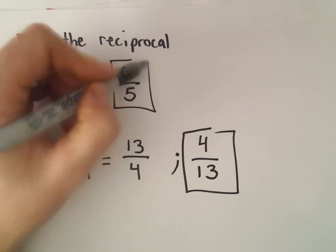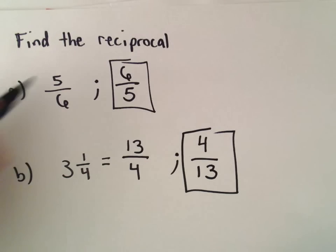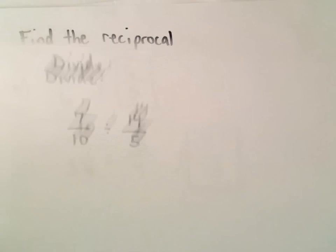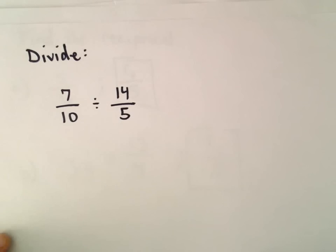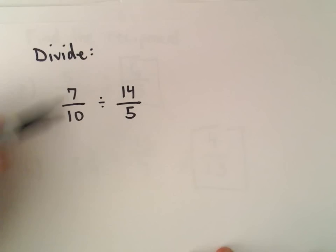Likewise, 6 over 5 would be the reciprocal of 5 over 6. So let's do a couple where we actually have to do the division. Let's divide 7 over 10 divided by 14 over 5.